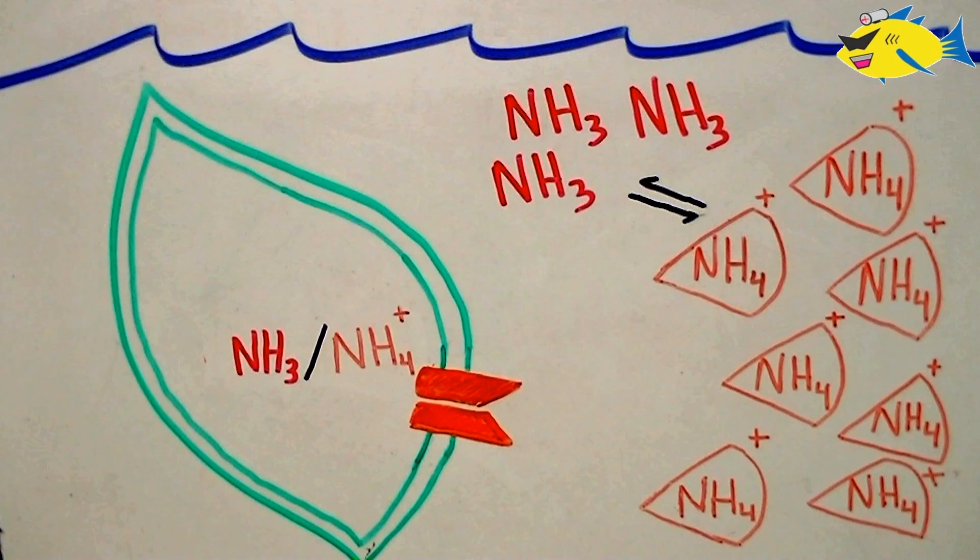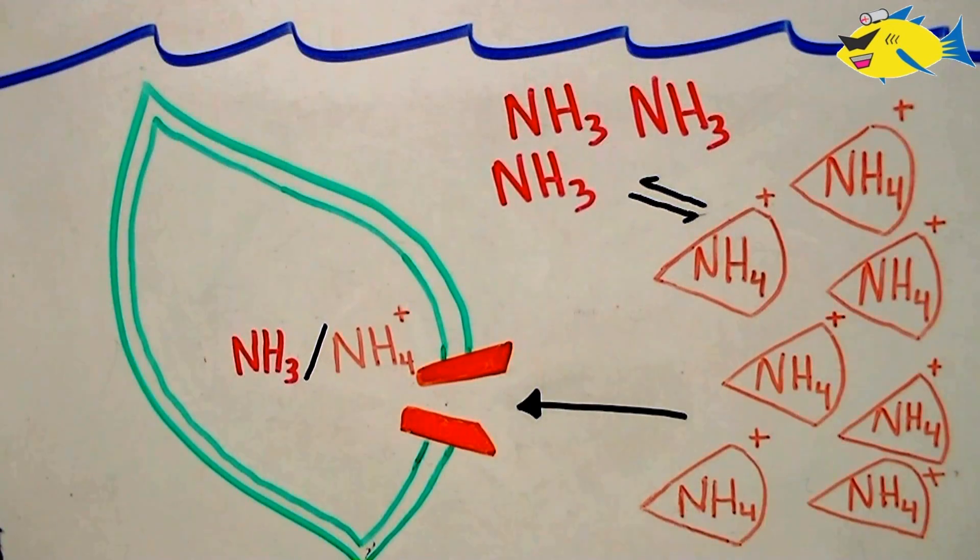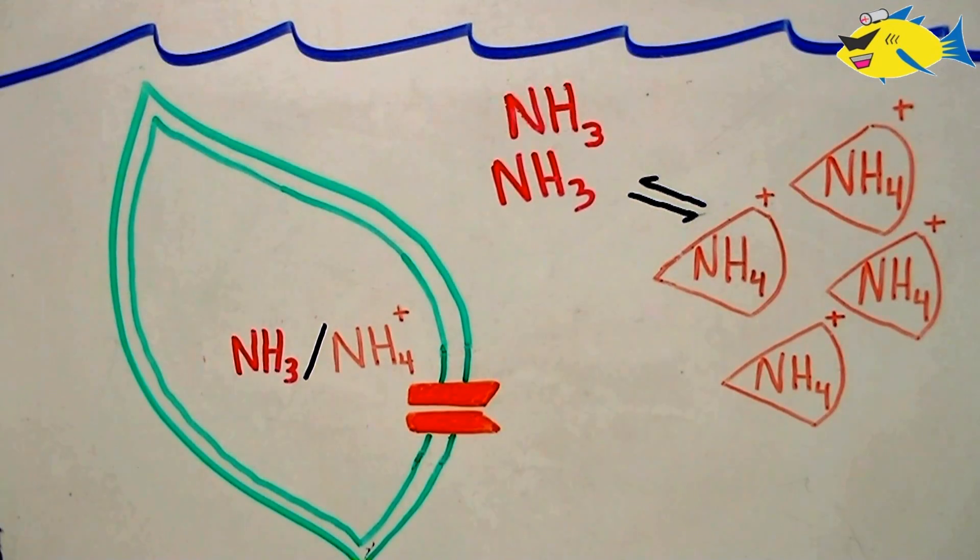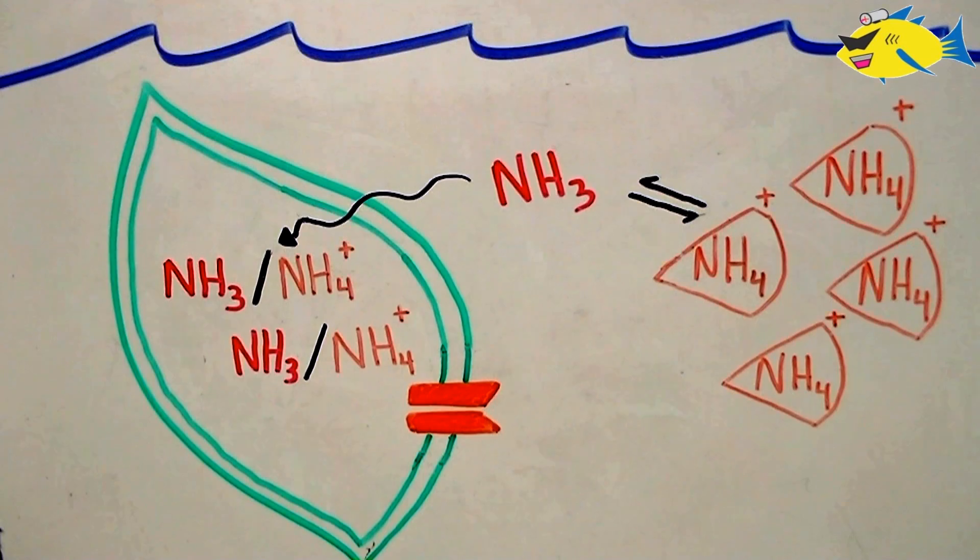Because these two forms of nitrogen are in an equilibrium with one another, when ammonium concentrations are reduced, so are the concentrations of ammonia. This is further amplified by the fact that ammonia is a non-polar molecule. It's free to diffuse into the cell and be used in the same fashion.